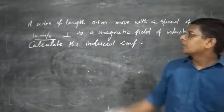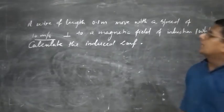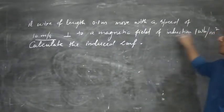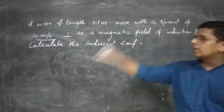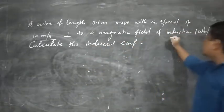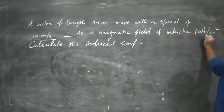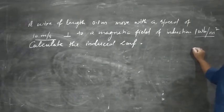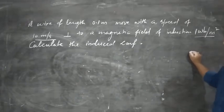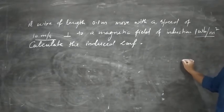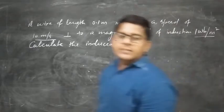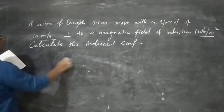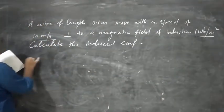First question: a wire of length 0.1 meter moves with a speed of 10 meter per second perpendicular to a magnetic field of induction 1 Weber per meter square. Calculate the induced EMF.